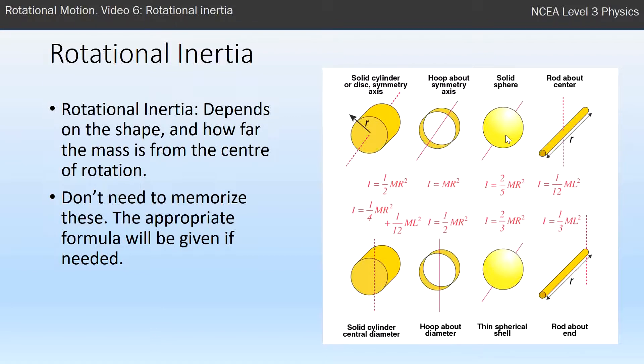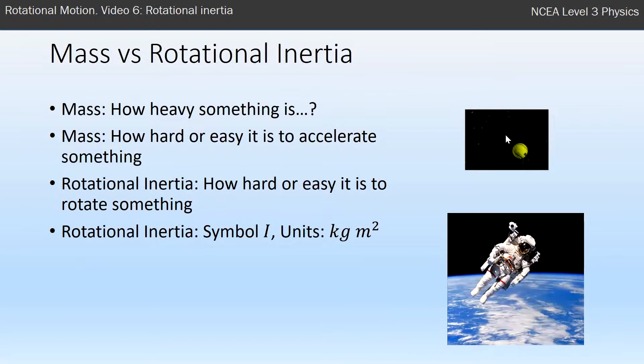Different shapes, different formulas. You will be given formulas if you need them. All of these have a formula that looks like something times MR squared, and that's where the kilograms meters squared comes from in our units.